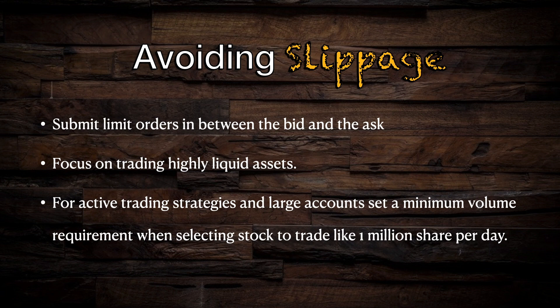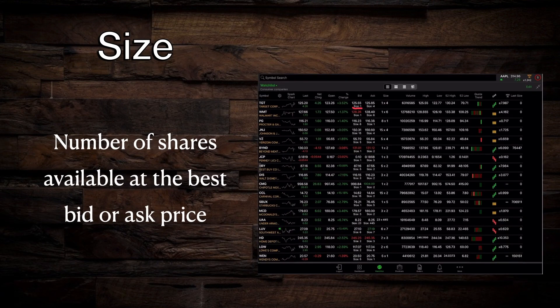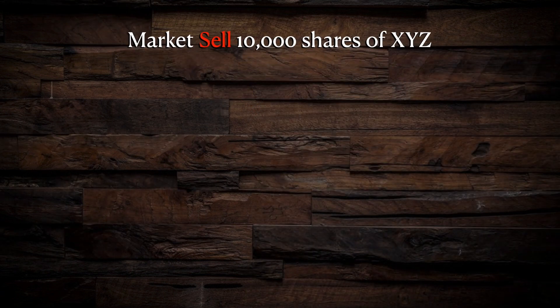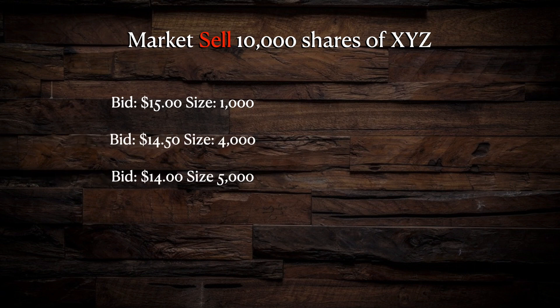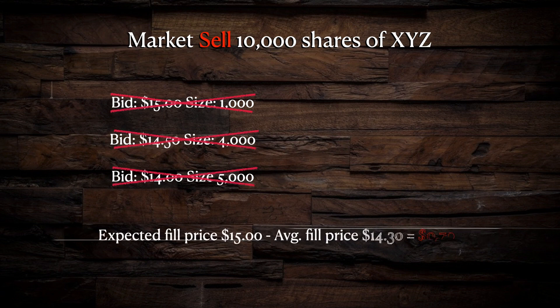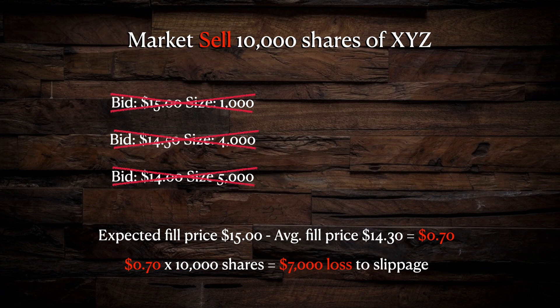The reason that large accounts require higher levels of liquidity is because there is another number in the bid-ask chain labeled size. The size expresses the number of shares available at that bid or ask price. So if you sell 10,000 shares using a market order, but there are only 1,000 shares available at the highest bid price of $15, the other 9,000 shares will be sold at lower prices. In this example, your average transaction price would be around $14.30, which means you would have lost an unexpected $7,000 on this trade. This is another type of slippage. Your best defense will be to break your large transaction into smaller pieces and use limit orders whenever you can.